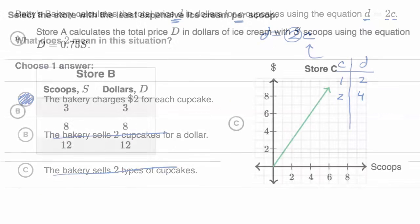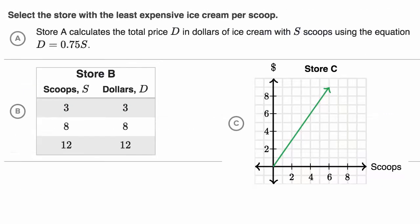Let's do another one. Here we are told select the store with the least expensive ice cream per scoop. There's definitely a dessert theme going on over here. Pause this video and see if you can work it out. Is it choice A, choice B, or choice C?